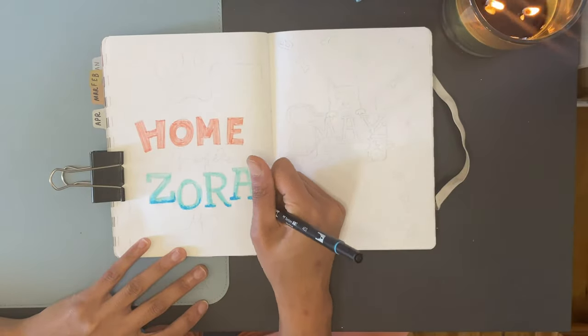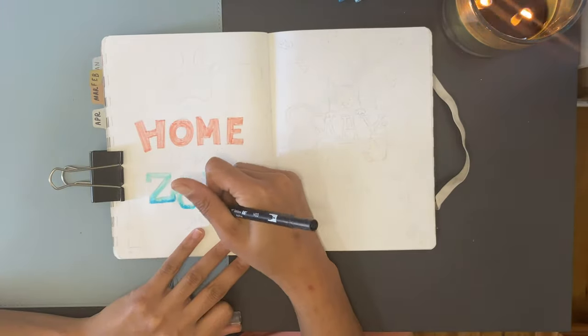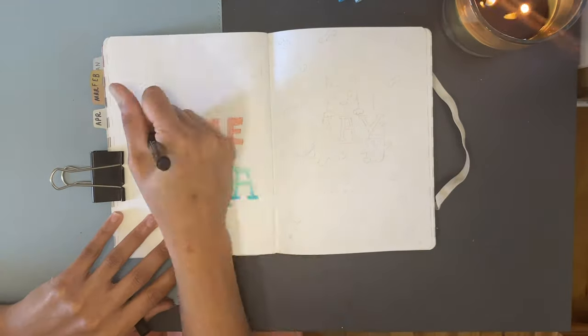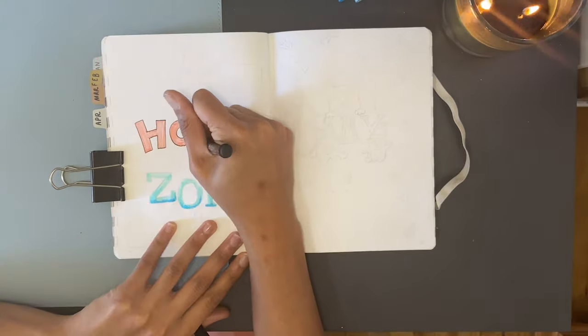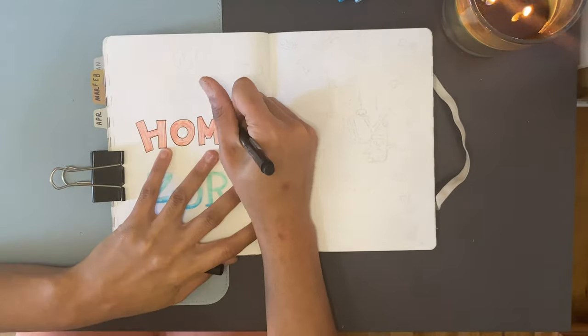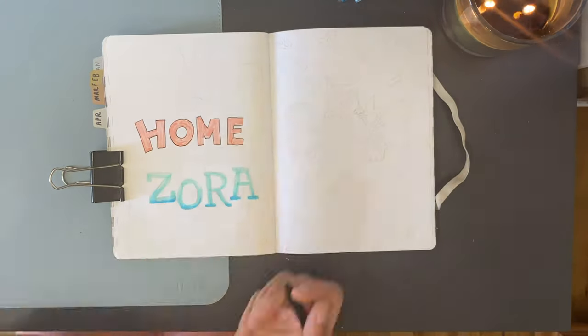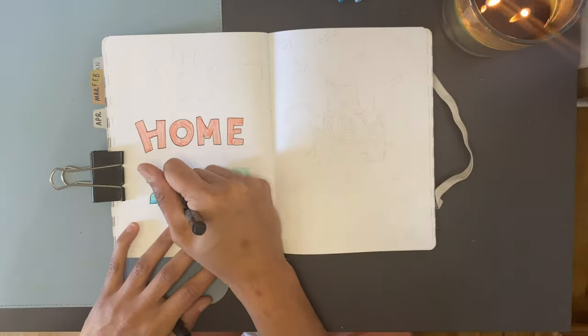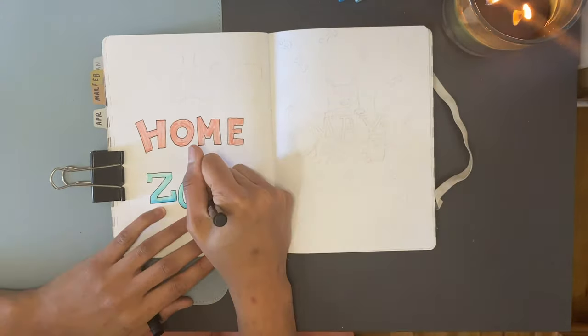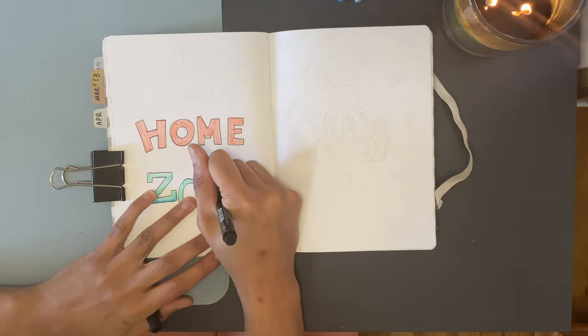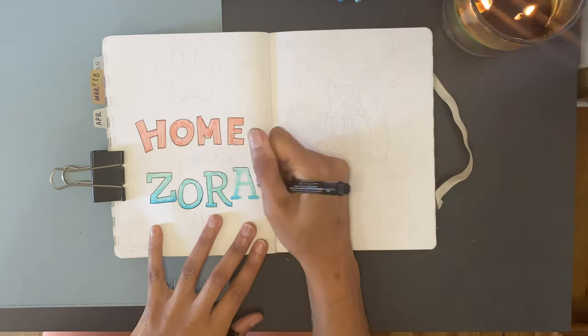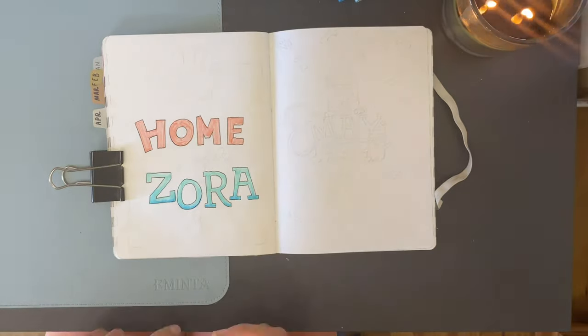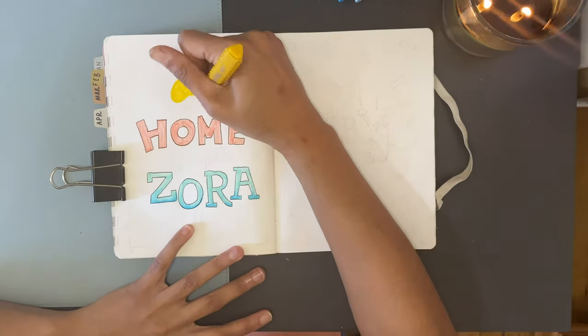Luckily those colors work well together and look springy and bright. I'm going in with two different blues just to give a bit more interest and dimension. One's a more seafoam blue and the darker one is closer to a sky blue. I'm using the darker blue along the bottom of the letters to really give a subtle ombre effect and blending that using the Tombow dual brush blender. I'll try to link or mention all of my supplies down in the description for you if you're curious about anything.